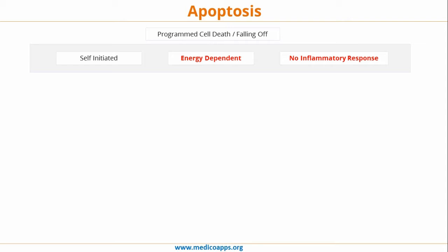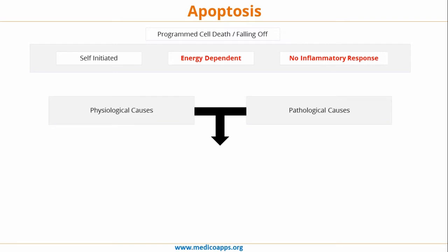Due to any physiological or pathological causes, there is cell stress or injury. Physiological causes may involve organogenesis, aging, and elimination of self-reacting lymphocytes. Pathological causes may involve DNA damage due to radiation, anti-cancer drugs, cell infection, or tumor cells.